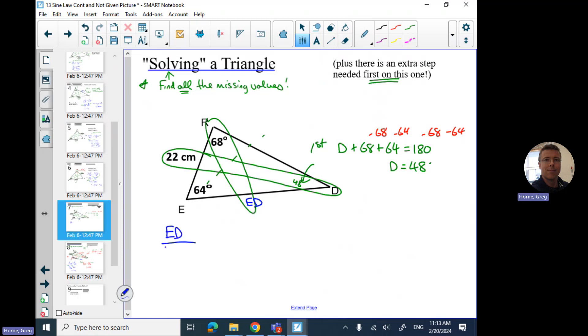So basically just have to set up sine law ratios or equations or however you want to look at it and get some numbers. The ED side, that was important, start with that. So we're going to get ED over sine of 68 equal the 22 over the sine of 48. You just multiply it to get ED all by itself. And we're left with ED equals all that stuff. So we're going to do the 22 times the sine of 68 divided by sine of 48. So there's that number there, 27.4.